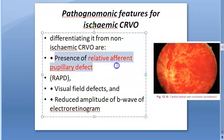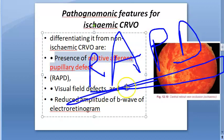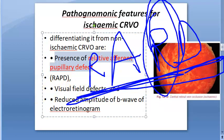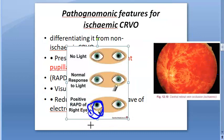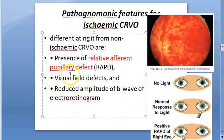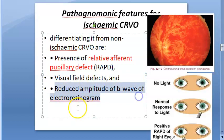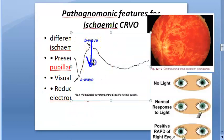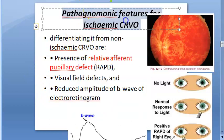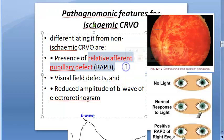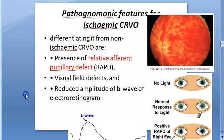The pathognomonic features of ischemic CRVO include a relative afferent pupillary defect — RAPD, also called Marcus Gunn pupil. In the swinging light test, the pupil dilates. These patients will also have visual field defects and a reduced amplitude of the B-wave in the electroretinogram. So to summarize: ischemic CRVO has RAPD, visual field defects, and reduced B-wave amplitude in ERG.